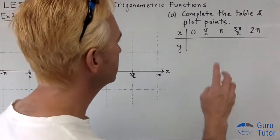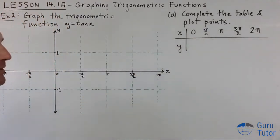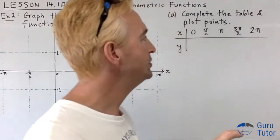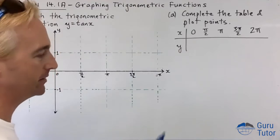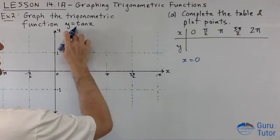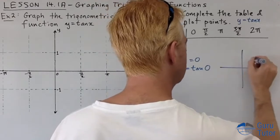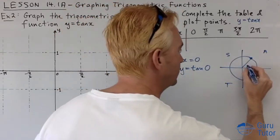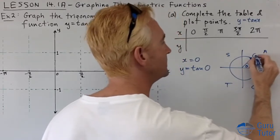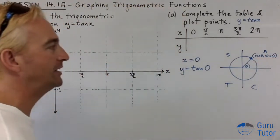To graph y = tan x, we're going to complete a table using the quadrantal angles like we did for sine x, plot these points, and see what kind of pattern emerges. We may get another wave shape — or maybe not. Remember from the unit circle: theta gives us coordinates (cos θ, sin θ) as the point moves around.